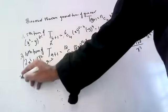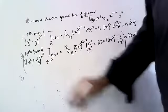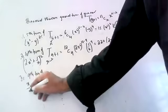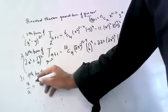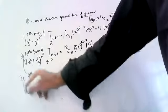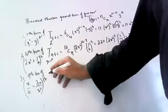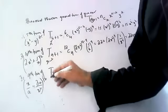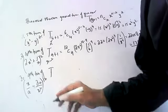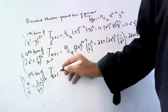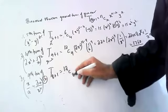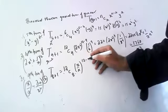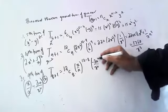Next question: what is the ninth term of (x/a - 3a/x²)¹²? The ninth term means T(8+1), r = 8. So it is 12C8 · (x/a)^(12-8) · (-3a/x²)^8.